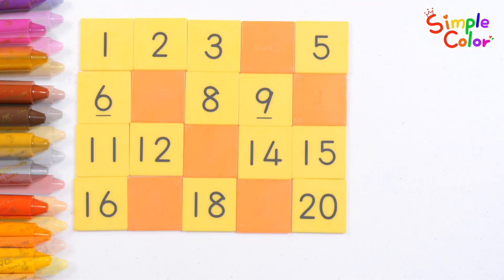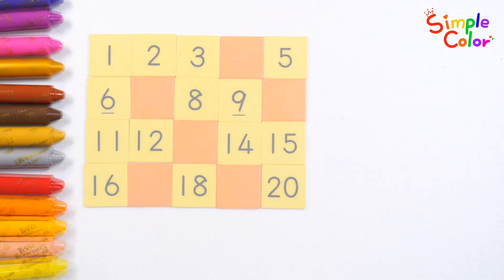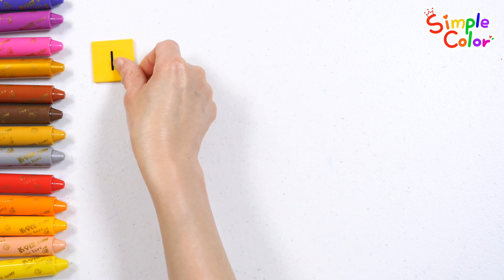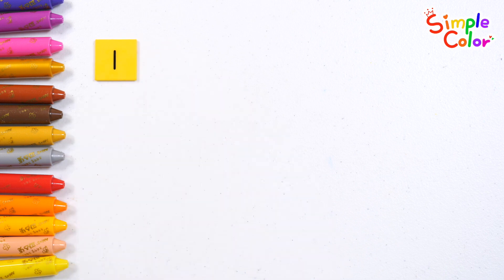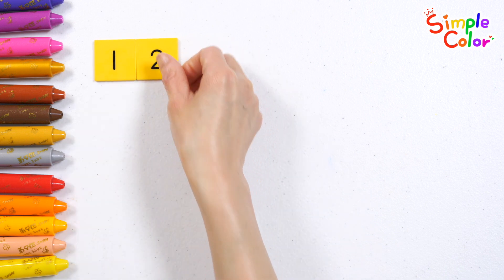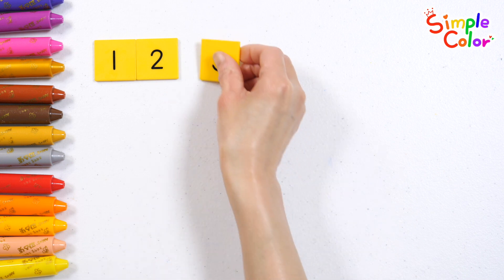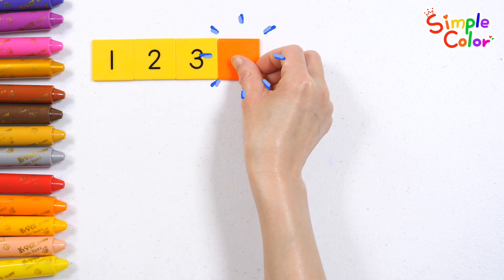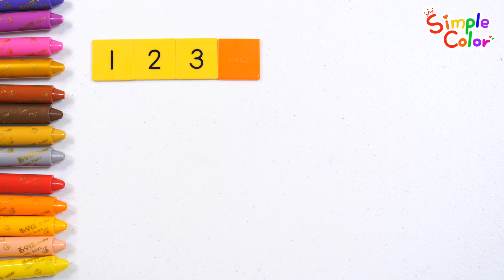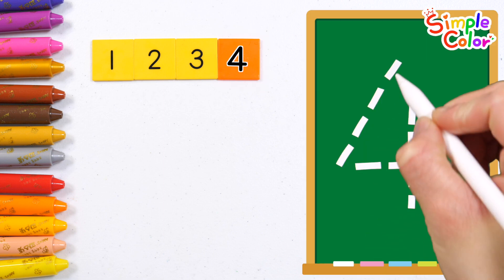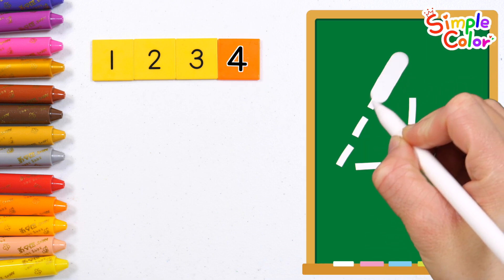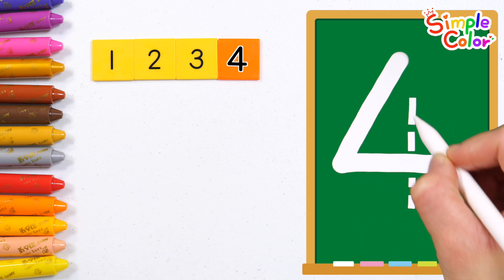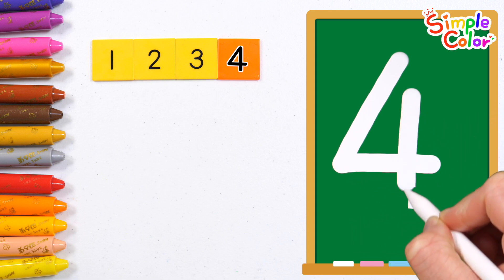Read the numbers from 1 to 21 by 1 and guess the number that goes in the blank. 1, 2, 3. Guess the correct number in the orange blank. That's right! 4. Let's write the number 4 on the board. 4.